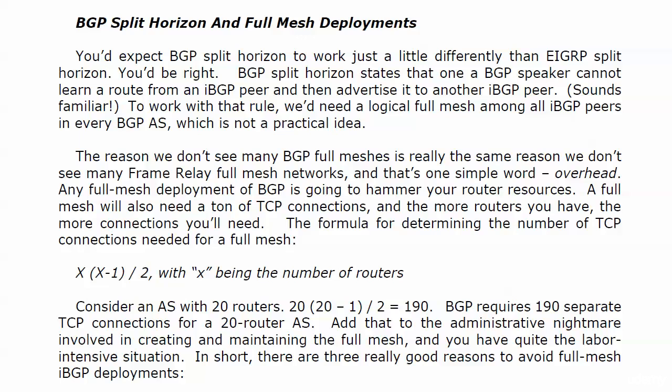A full mesh is also going to need a ton of TCP connections. To figure out exactly how many, here's a quick formula: it's x times (x minus 1) divided by 2, where x is the number of routers. If you had an AS with 20 routers, using that formula you would need 190 separate TCP connections. We don't want to go there.